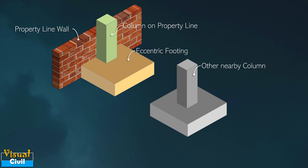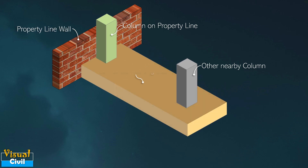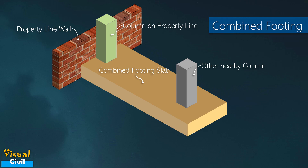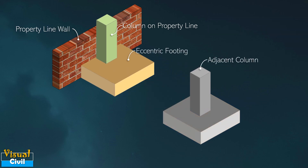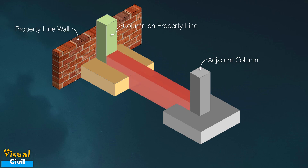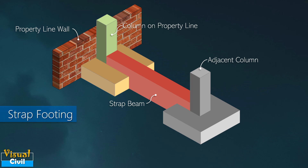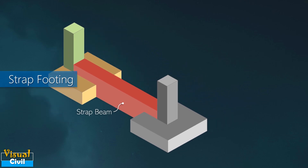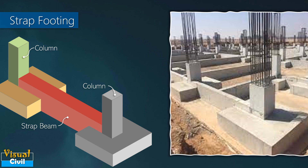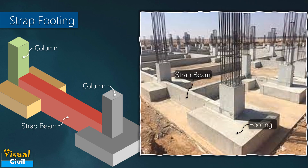If the peripheral column is on the property line, then the position of the column is at the edge of the footing. In this case it is preferred to combine that footing with a nearby closely spaced column footing. Otherwise, we can also connect the eccentric footing with an adjacent column footing by a beam called a strap beam. This arrangement helps distribute the weight of the eccentrically loaded column footing to the adjacent footing, and this type is called strap footing.